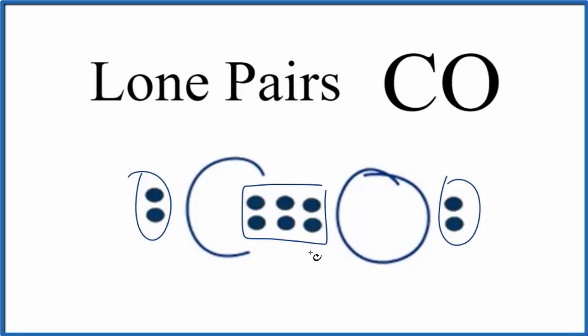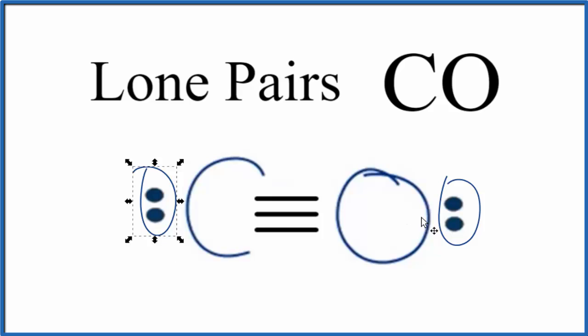Sometimes we'll replace these with lines to show that these electrons are involved in chemical bonds. But the ones on the outside, they're called lone pair electrons.